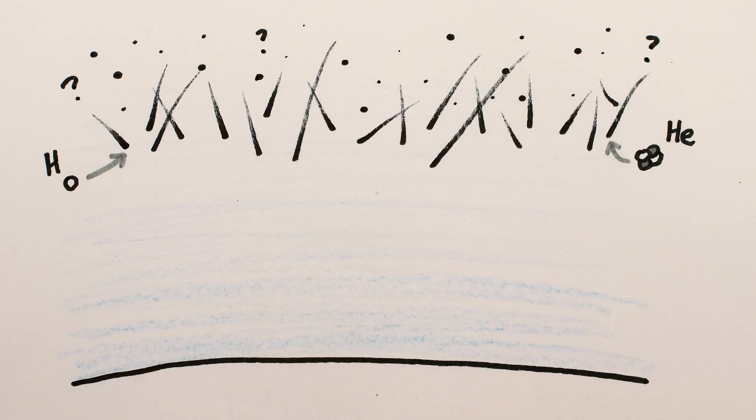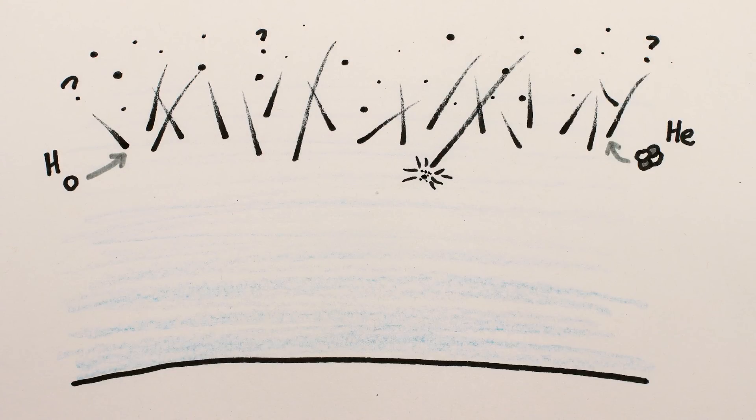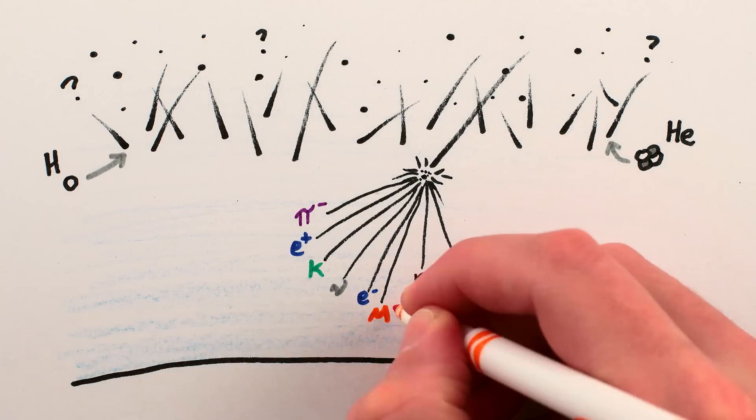We don't really know where they come from, but we do know that when cosmic rays crash into air molecules in the atmosphere, they create a shower of other fundamental particles – pions, kaons, positrons, electrons, neutrons, neutrinos, gamma and x-rays, and muons.